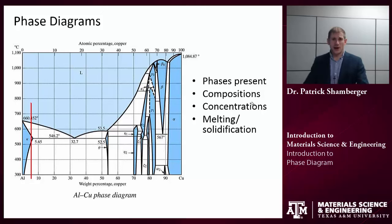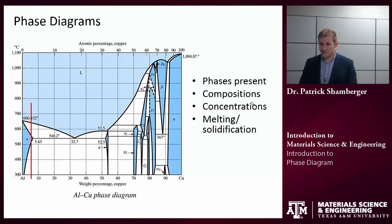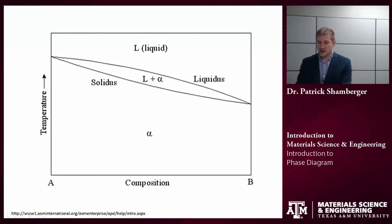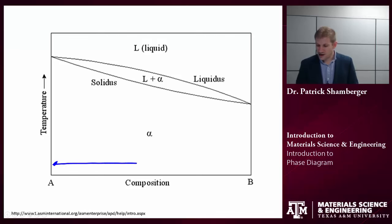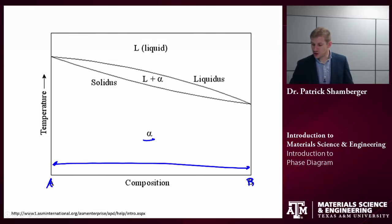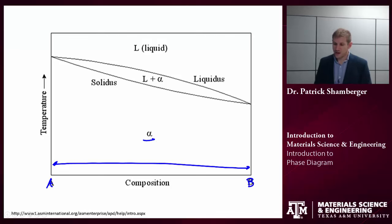This is a very complicated system I've decided to show you at the beginning just to scare you a little bit. You see a whole bunch of different phases present, a whole bunch of different fields with multiple phases present. We're going to start with something a little bit simpler called an isomorphous binary phase diagram. Isomorphous means there's a continuous solid solution — from one end to the other at low temperatures we have a single phase present. Binary refers to the fact that there are two components in the system.